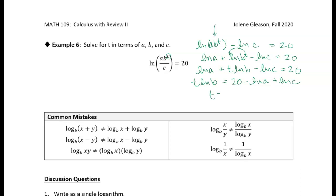And then what I need to do is just divide both sides by the natural log of b. So t then will be equal to 20 minus the natural log of a plus the natural log of c all over the natural log of b. So there you go. We have an expression for t in terms of a, b, and c.